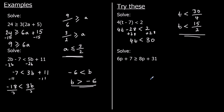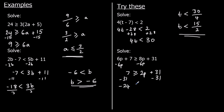The second one has p on both sides. I'll get rid of the smallest p by taking 6p away from both sides, leaving 7 ≥ 2p + 31. Then subtracting 31 from both sides gives −24 ≥ 2p. Dividing both sides by 2, and writing p at the front, p ≤ −12.